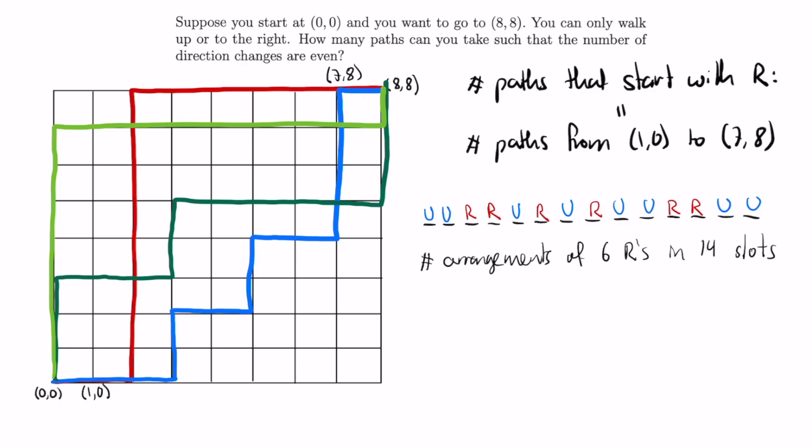This is just the number of combinations using n equals 14 and k equals 6, so the number of paths is 14 choose 6, or 14 factorial divided by 6 factorial times 8 factorial.